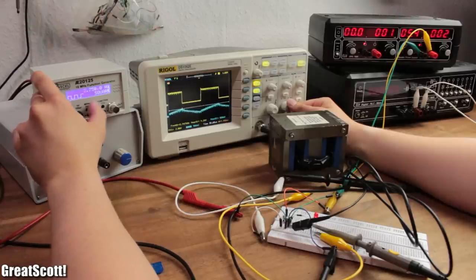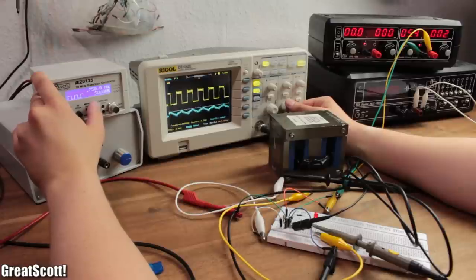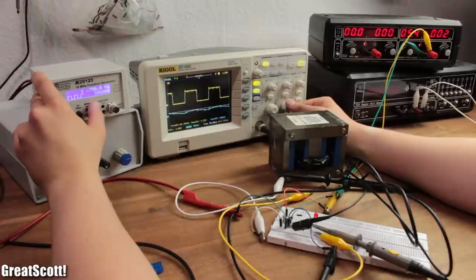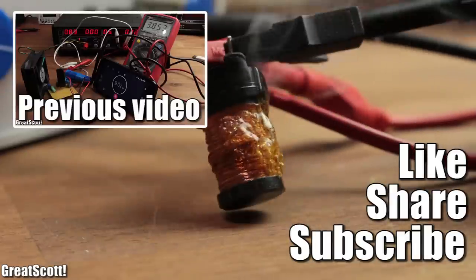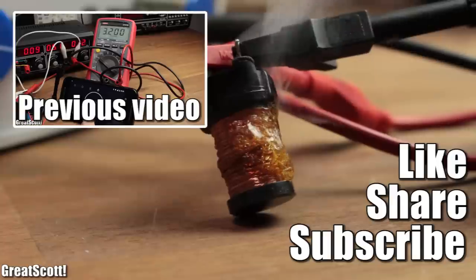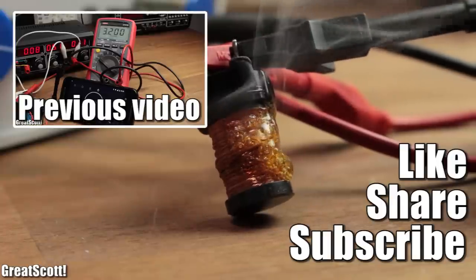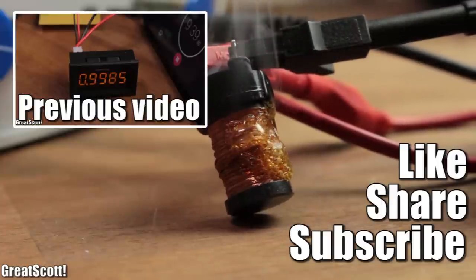Now you know how inductors behave in DC circuits. Check back with part 2 to find out about frequency filters, reactance, and basically how coils behave in AC circuits. Until then, don't forget to like, share, and subscribe for more electronics basics. Stay creative and I will see you next time.